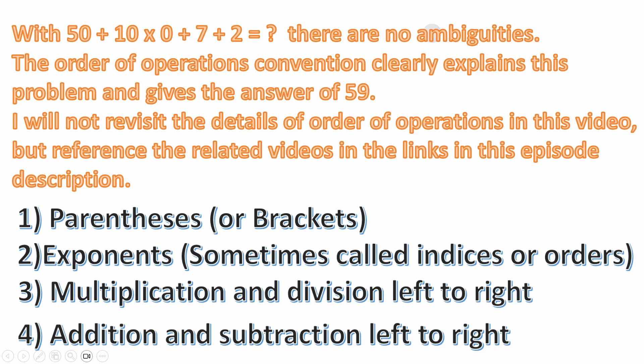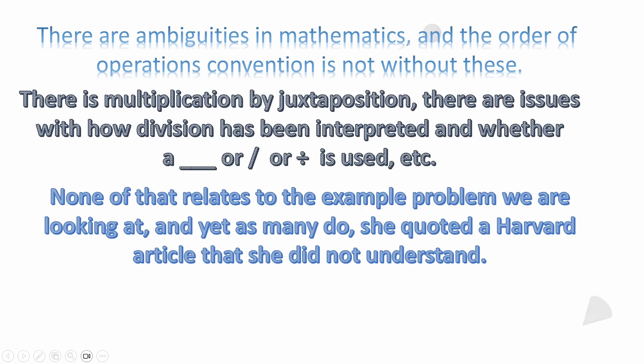When we look at this problem — and I've covered it in its own video, I'll put the links in the notes — with 50 + 10 × 0 + 7 + 2, there are no ambiguities. The order of operations convention clearly explains this problem and gives us the answer of 59. I'll show the basics here: parentheses, exponents, multiplication and division left to right, addition and subtraction left to right. The rest I'm leaving in those other videos.